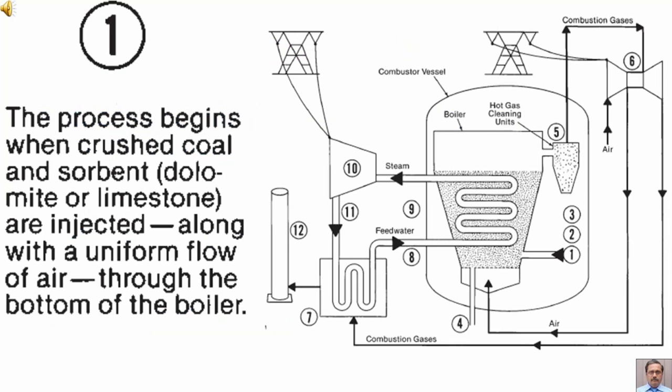Tag number 1. The process begins when crushed coal and sorbent, dolomite or limestone, are injected along with a uniform flow of air through the bottom of the boiler. The purpose of limestone is to remove sulfur dioxide, which is a combustion product.